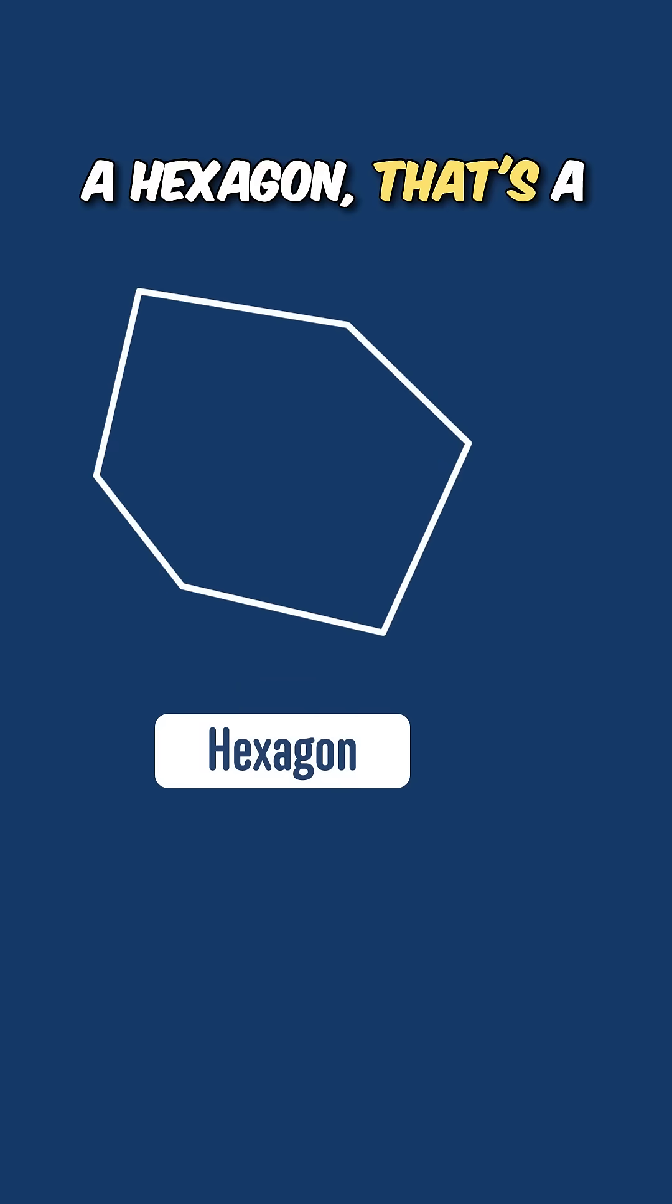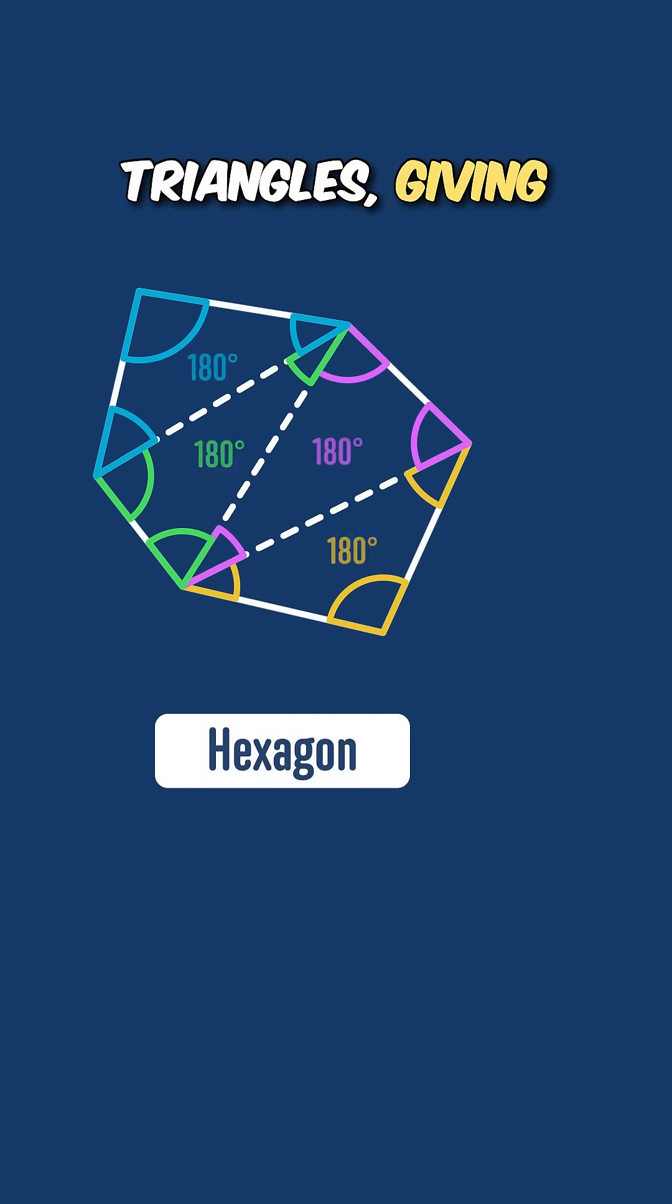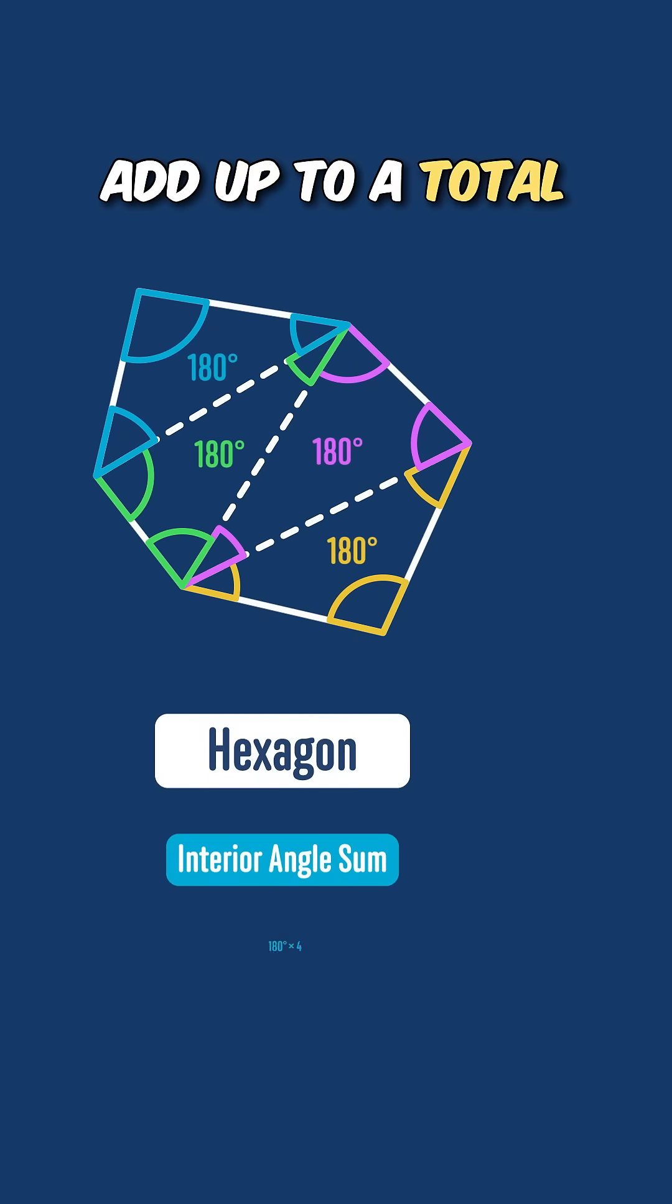A hexagon, that's a six-sided shape, could be split into four triangles, giving us angles that add up to a total of 180 times 4 or 720 degrees.